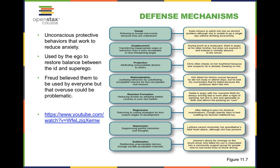Regression is whenever we return to coping strategies from less mature states of development. For example, after failing to pass his doctoral examinations, Giorgio spends his day in bed cuddling his favorite childhood toy. Other people, whenever something bad happens, may engage in an adult temper tantrum — acting out in a less mature state instead of dealing with their emotions, sometimes not knowing what else to do.